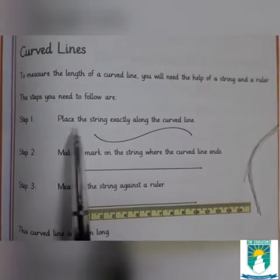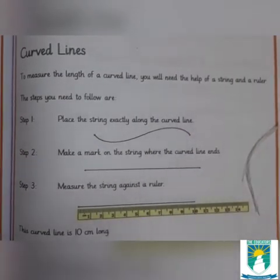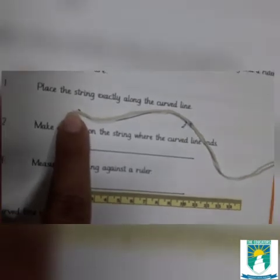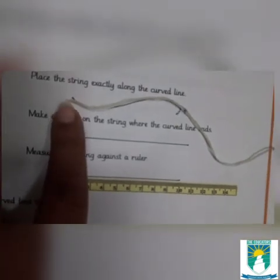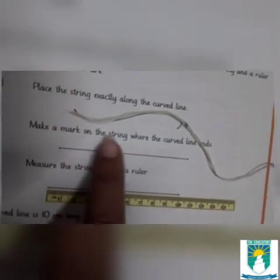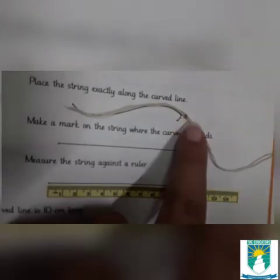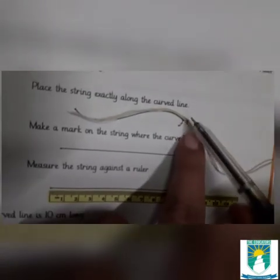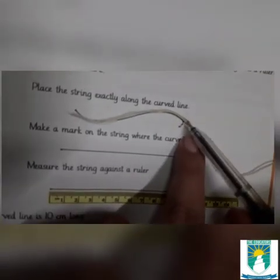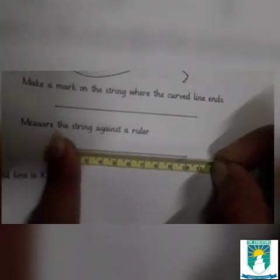Step 1: place the string exactly along the curved line. Place your string on your curved line like this. Now make a mark on the string where the curved line ends. Then measure the string with your ruler.